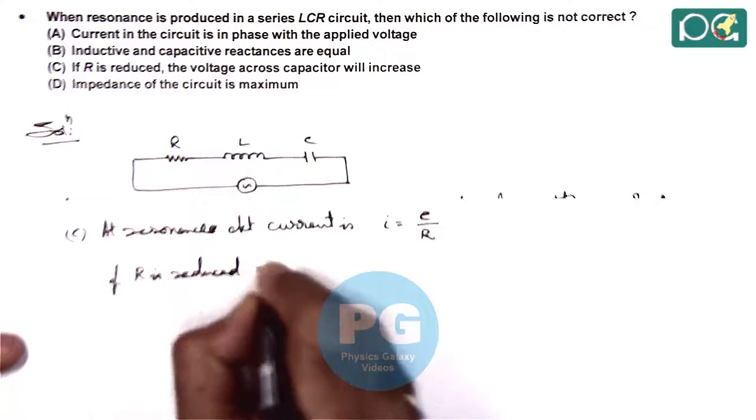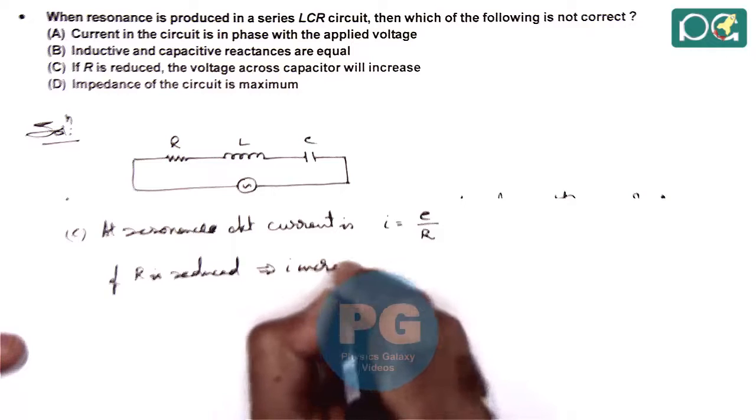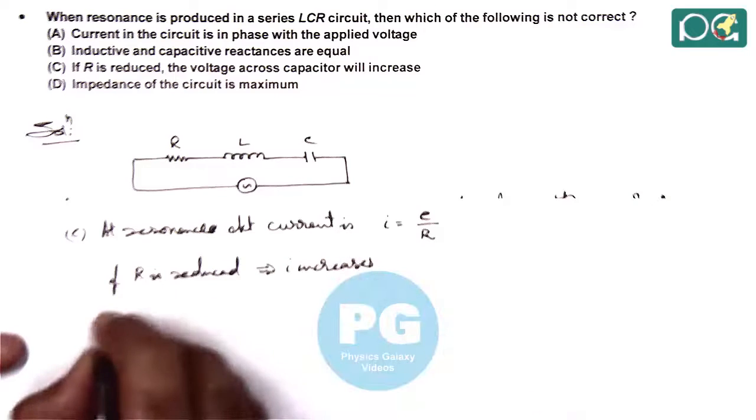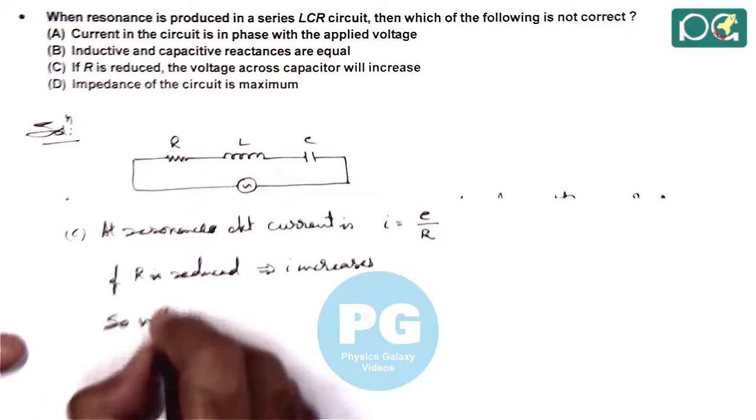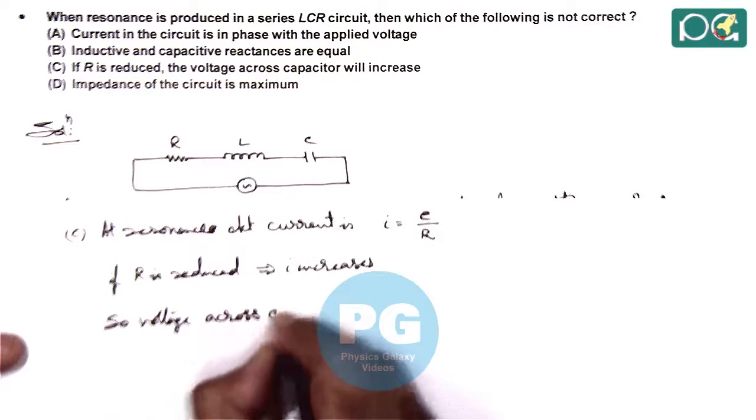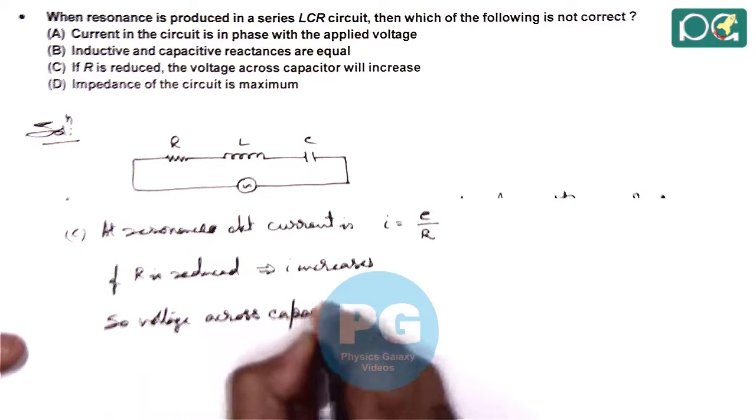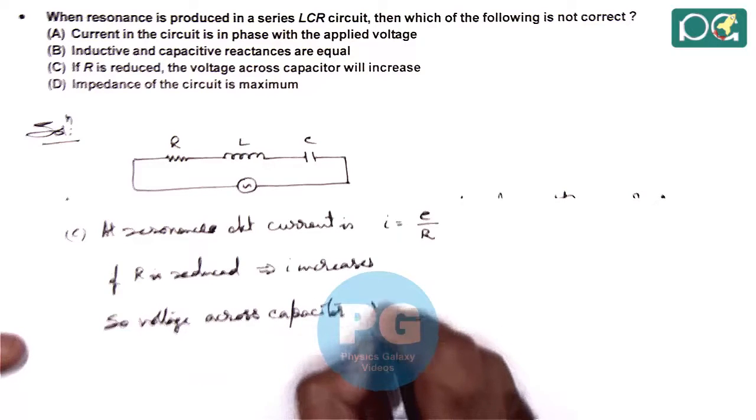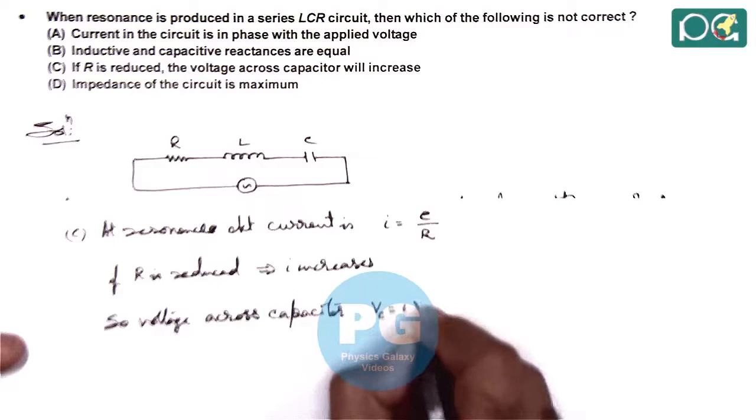this implies I increases. So if we talk about voltage across capacitor, it is given as VC is equal to I XC.